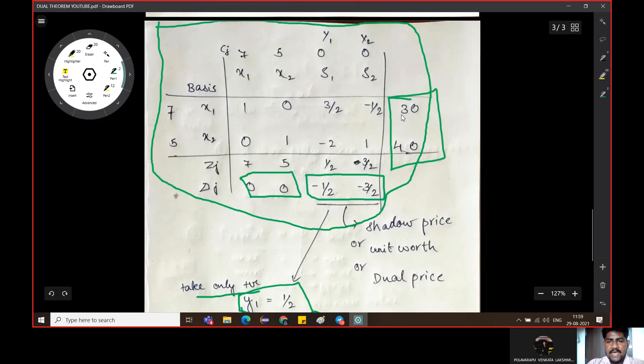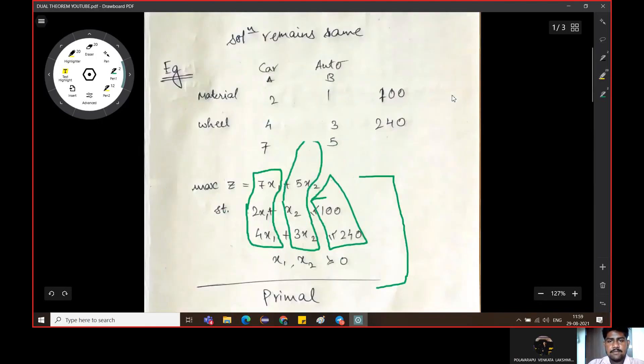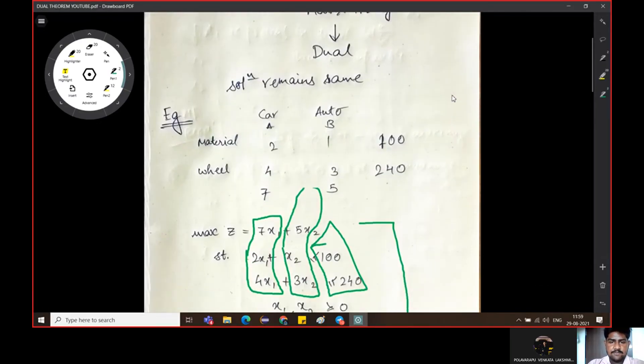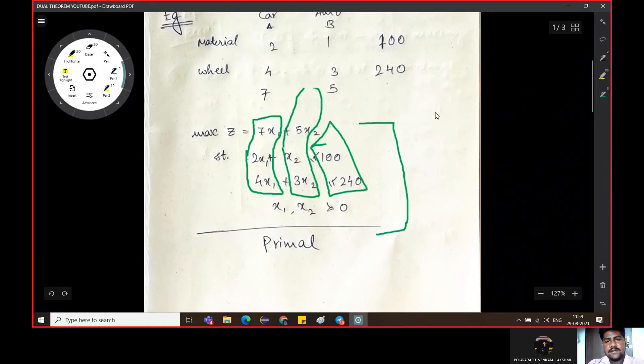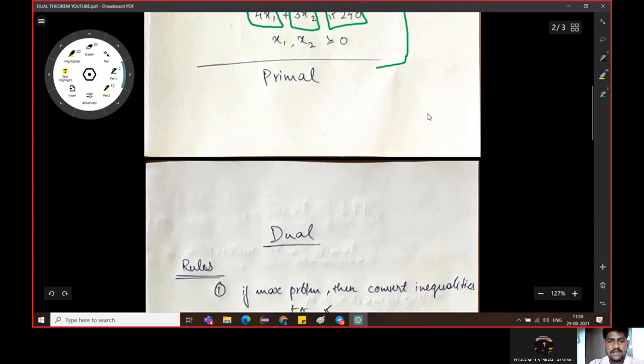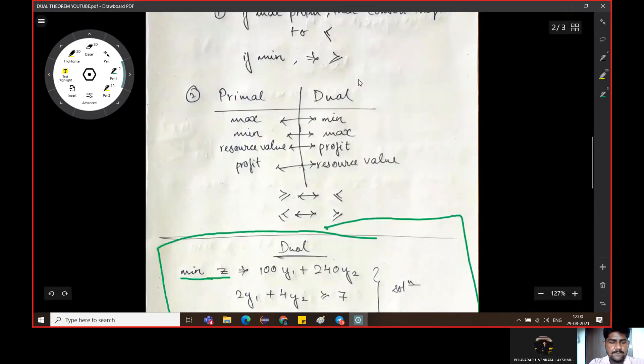And if we get the maximizer, the answer is 410. The answer is equal to 1 by 2. So this was about dual.